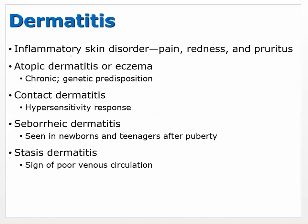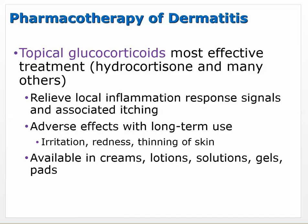Dermatitis is a general term for an inflammatory skin disorder that includes pain, redness, and pruritus — usually itchy. Atopic dermatitis (eczema) is chronic and tends to have a genetic predisposition. Contact dermatitis is a hypersensitivity response, often an allergy to something. Seborrheic dermatitis is seen in newborns and teenagers after puberty. Stasis dermatitis is a sign of poor venous circulation — blood flow not moving as it should — causing a skin reaction, which is more systemic in nature.